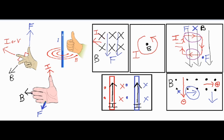With our first problem using the three-finger rule: take the thumb and point it toward the bottom of the screen, take the middle finger and point it into the screen, and the pointer finger ends up pointing to the left — which is the same answer we got before.